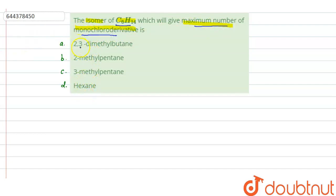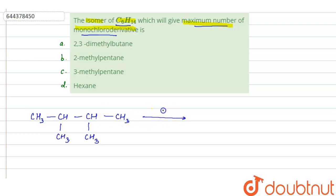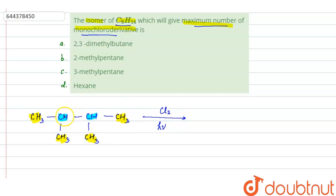Let us start with the options given. The first option is 2,3-dimethylbutane. The structure of 2,3-dimethylbutane is CH3-CH(CH3)-CH(CH3)-CH3. When treated with chlorine in the presence of sunlight, there will be substitution of hydrogen by chlorine and we get a monochloro derivative. In this molecule, all four CH3 groups are similar, and the two CH groups are also similar, so there are two types of carbon atoms giving two possible products.